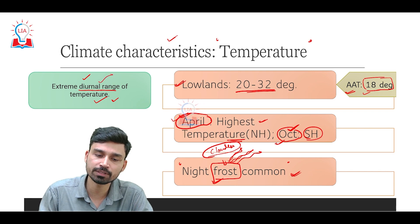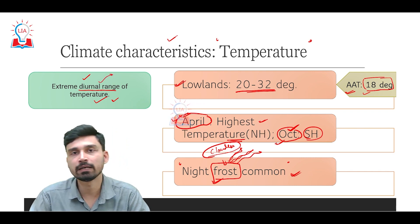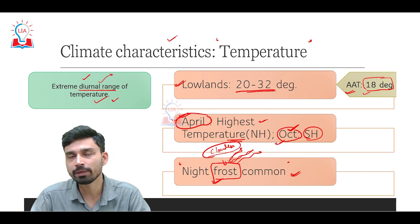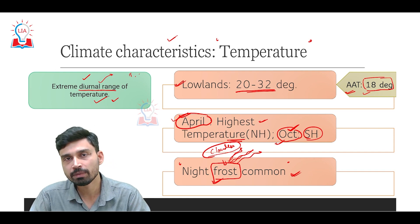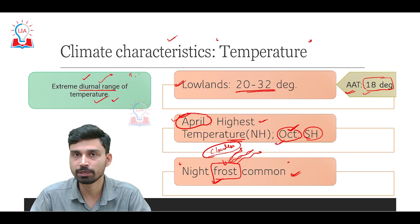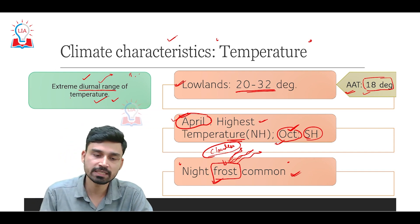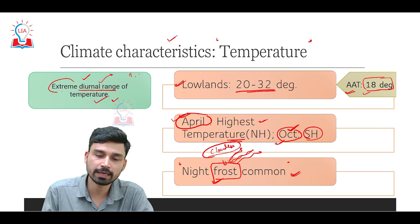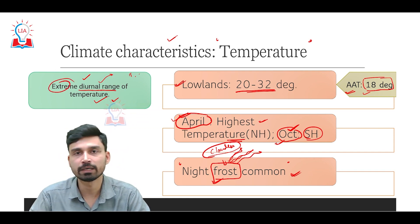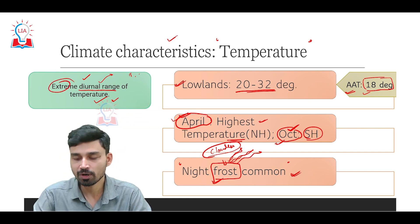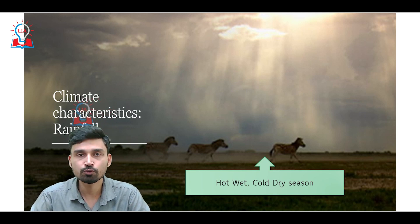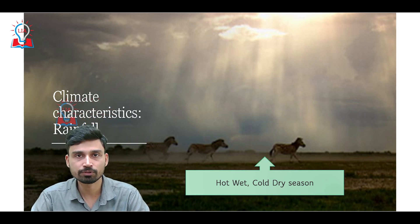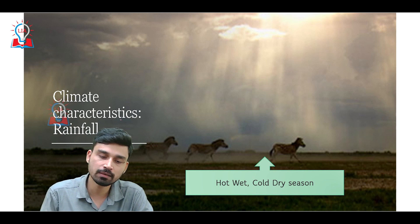Diurnal range of temperature simply means the maximum temperature minus the minimum temperature recorded within a 24-hour period. This range is extreme in the case of savannah climate. This is all about the temperature characteristics of savannah.